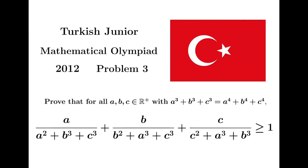Let's take a look at this problem, taken from the Turkish Junior Mathematical Olympiad 2012. It says: prove that for all positive real numbers A, B, and C such that A cubed plus B cubed plus C cubed equals A to the 4th plus B to the 4th plus C to the 4th, the expression A over (A squared plus B cubed plus C cubed) plus B over (B squared plus A cubed plus C cubed) plus C over (C squared plus A cubed plus B cubed) is greater than or equal to 1.